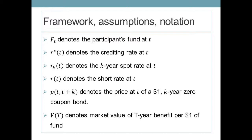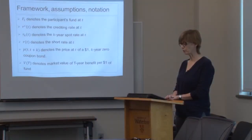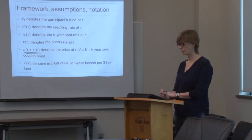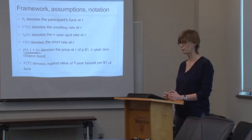R_T is the short rate at T, which you can interpret as an annualized overnight rate. It is the fundamental building block of interest rate models. Using R_T or R_{KT}, we can calculate zero-coupon bond prices. P(T, T+K) denotes the price at time T of a K-year zero-coupon bond, which works as a discount factor in discounting future payments from T+K back to T. Again, at time T this is observable, but before time T it is a random variable.